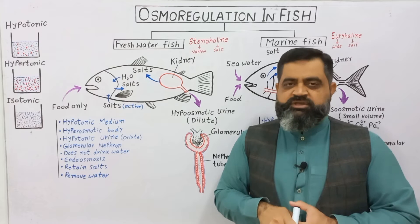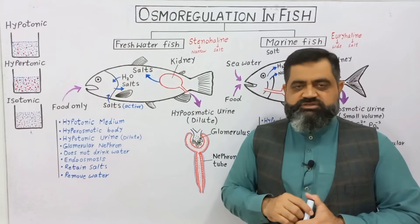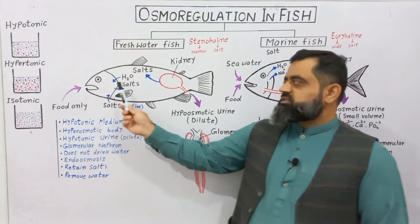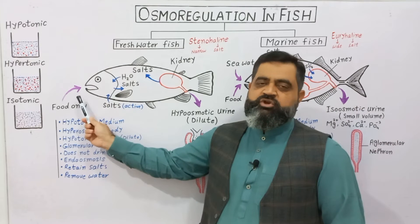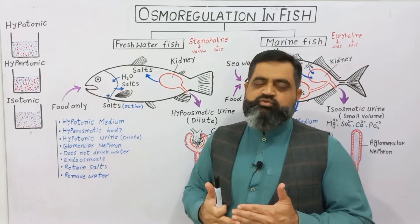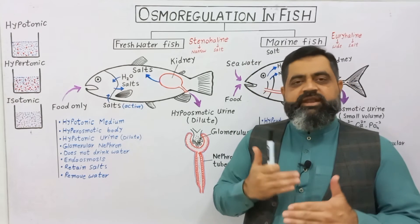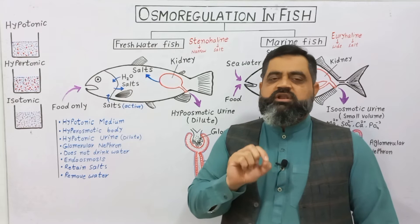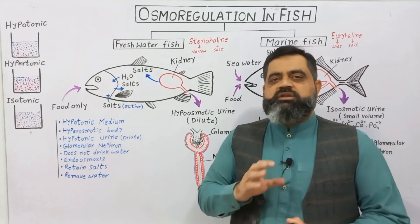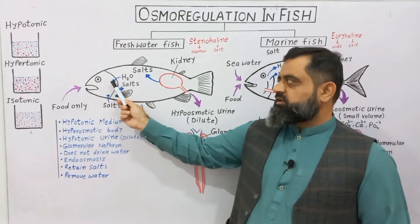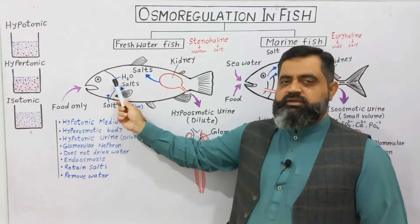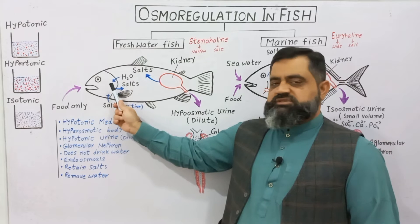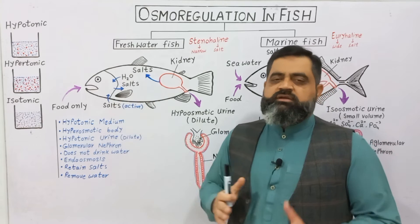Such fish have adopted adaptations to survive in this environment. First, they do not drink water, because water is already constantly entering their body through endosmosis. They only eat food such as algae or insects. Their gills absorb water from their blood and remove it into the environment, and their gills also absorb salts and put them into the blood, so that loss of salt can be prevented.